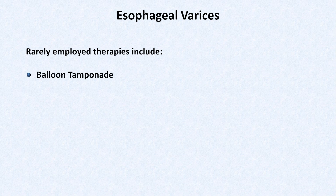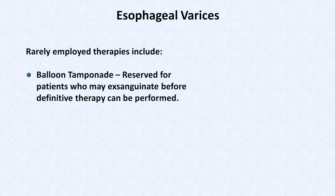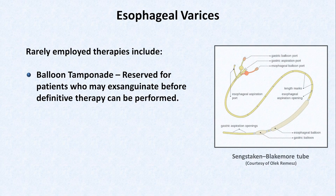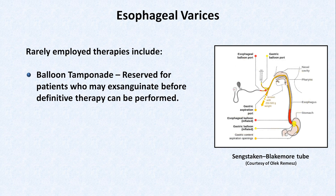The first is balloon tamponade. This temporary intervention is reserved for patients who may exsanguinate before definitive therapy can be performed, either because the quantity of bleeding is profound, or because endoscopy is delayed, or endoscopy was unsuccessful and the clinicians need to buy time for something more dramatic. There are several different contraptions used to achieve balloon tamponade. This is a diagram of one called the Sengstaken-Blakemore tube, or often just the Blakemore tube. Placement of a Sengstaken-Blakemore tube is not trivial, and you should never attempt to place one without being appropriately trained. Risks include esophageal necrosis and rupture, the latter of which is often fatal. As endoscopy has become more refined and more widely available, the use of these tubes has dropped off considerably.